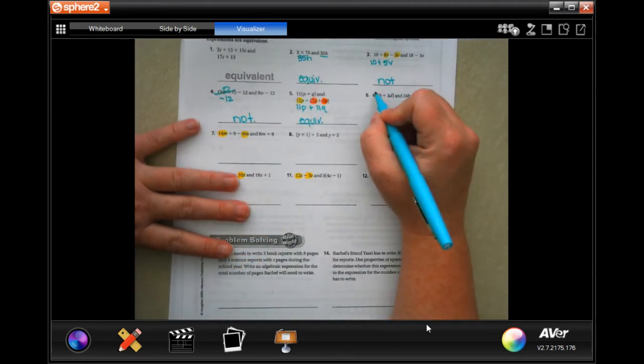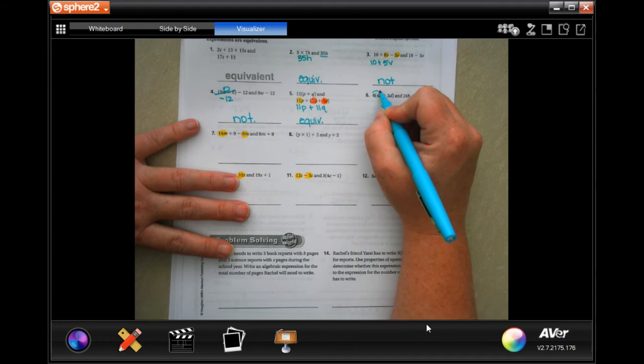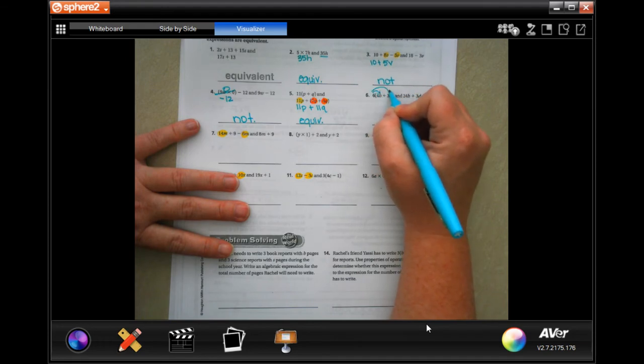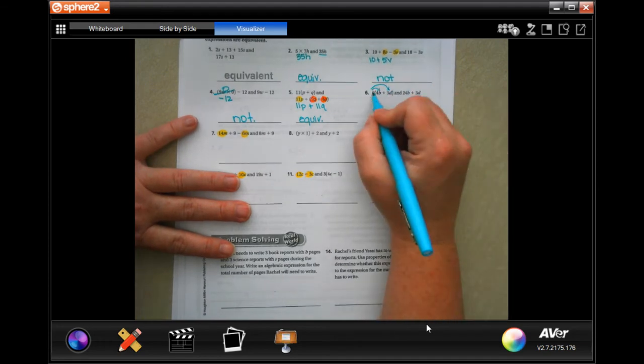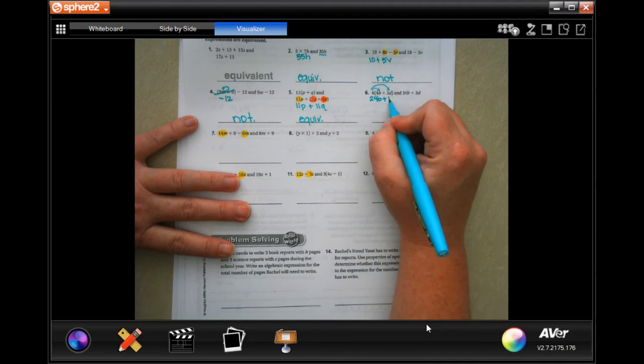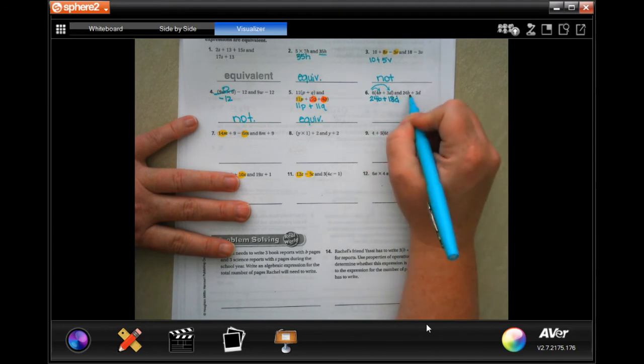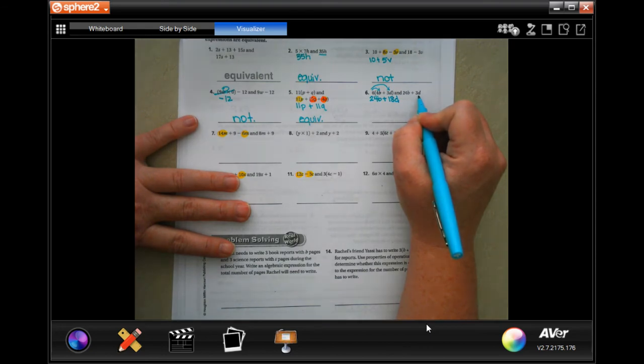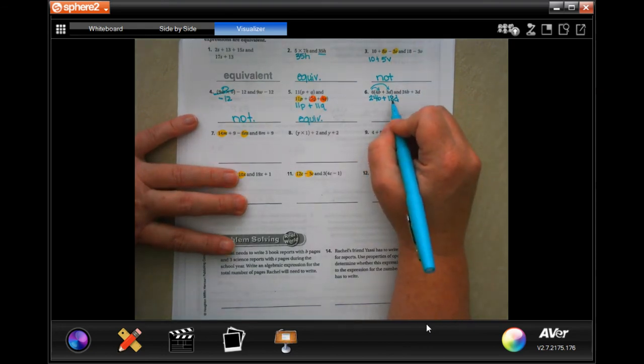Now, this one, we would have to distribute the 6 onto the 4b and onto the 3d. So 6 times 4 is 24, and we keep the b. We keep the sign that's in the middle, and 6 times 3 is 18, and we keep the d. So, 24b plus 3d, not equivalent.